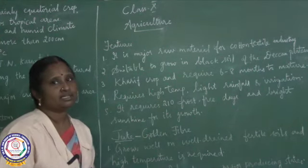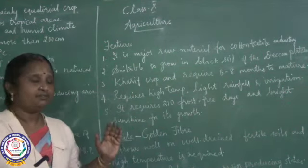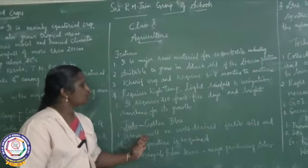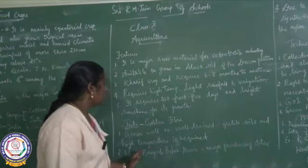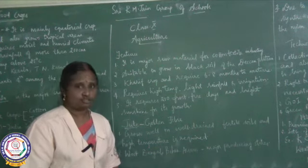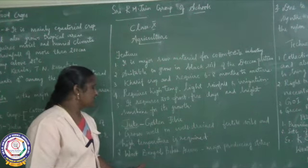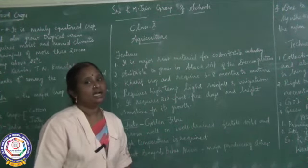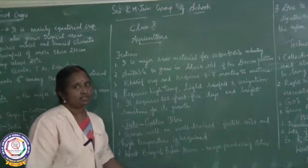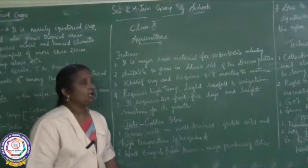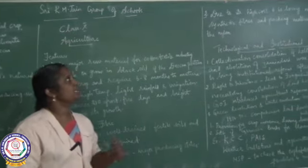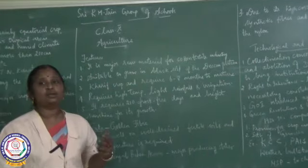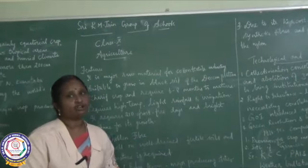The other fiber crop is jute, which has the other name 'golden fiber.' It grows well on well-drained fertile soils and requires high temperature. Major jute-producing states are West Bengal, Bihar, and Assam. However, jute is losing its market to synthetic fibers and packing materials — particularly nylon — because of its high cost.